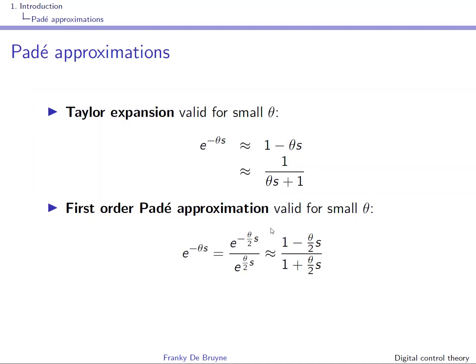In continuous time, as seen in the course of Signals and Systems, you can model a delay using the exponential of minus theta times S, where theta is the delay. The problem is not in modeling, but the problem lies in control design: the delay cannot be handled as a rational transfer function.